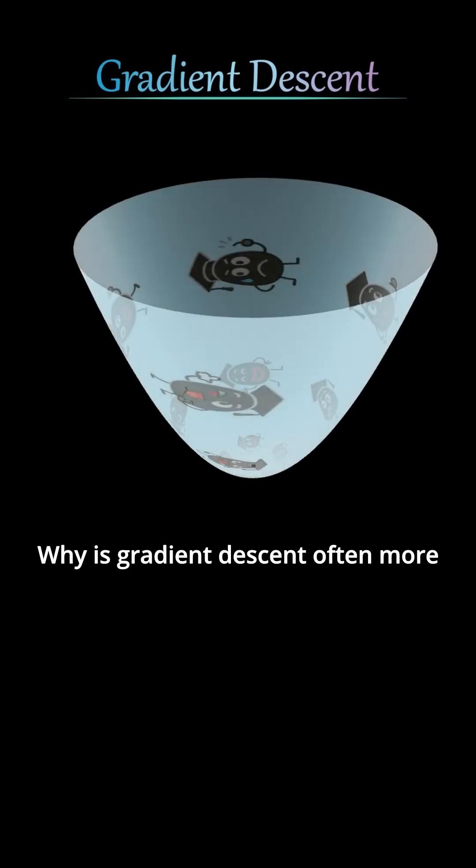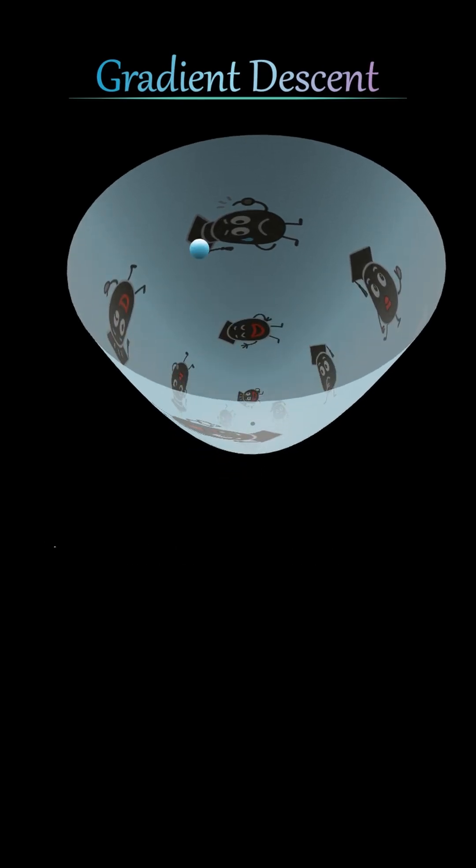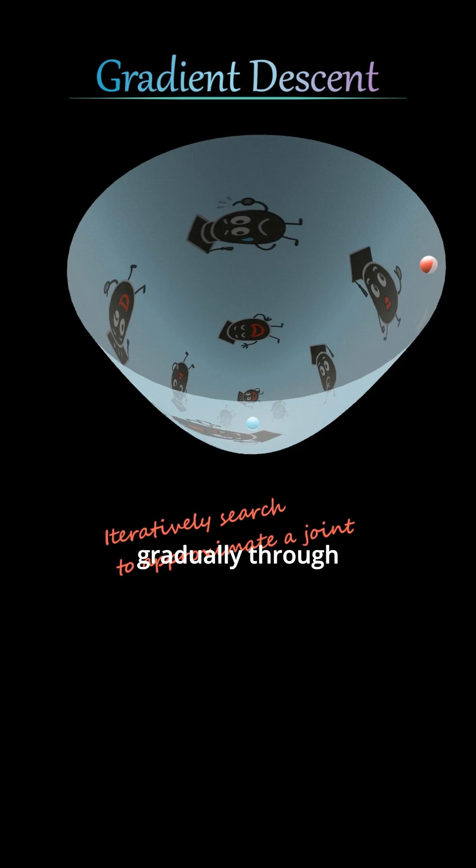Why is gradient descent often more efficient than the normal equation? Let's start with the intuition. The key idea is this: the normal equation computes a closed-form solution exactly, while gradient descent finds the solution gradually through iterative approximation.